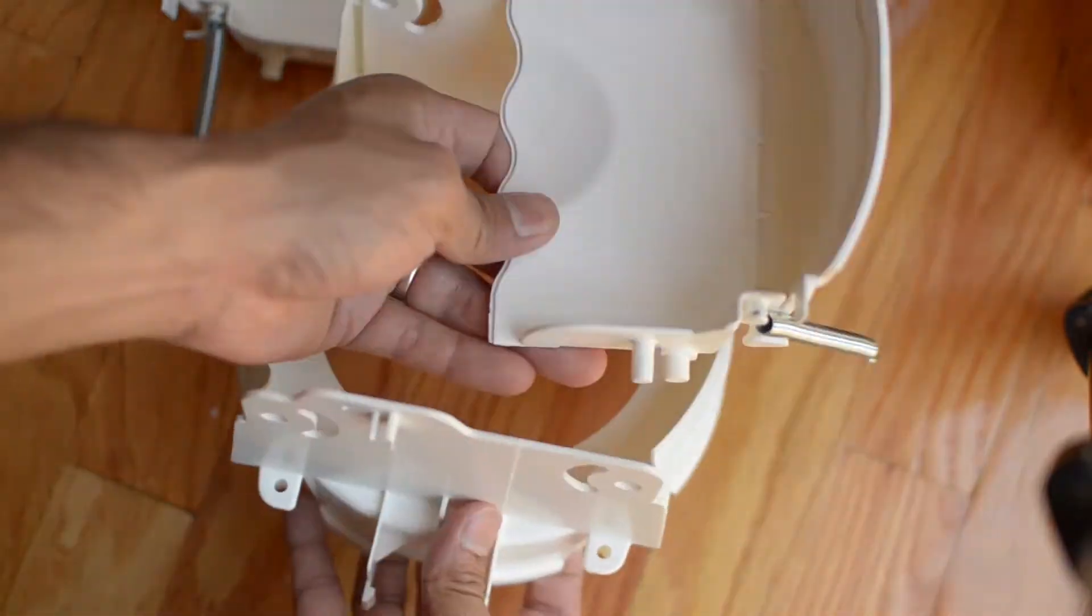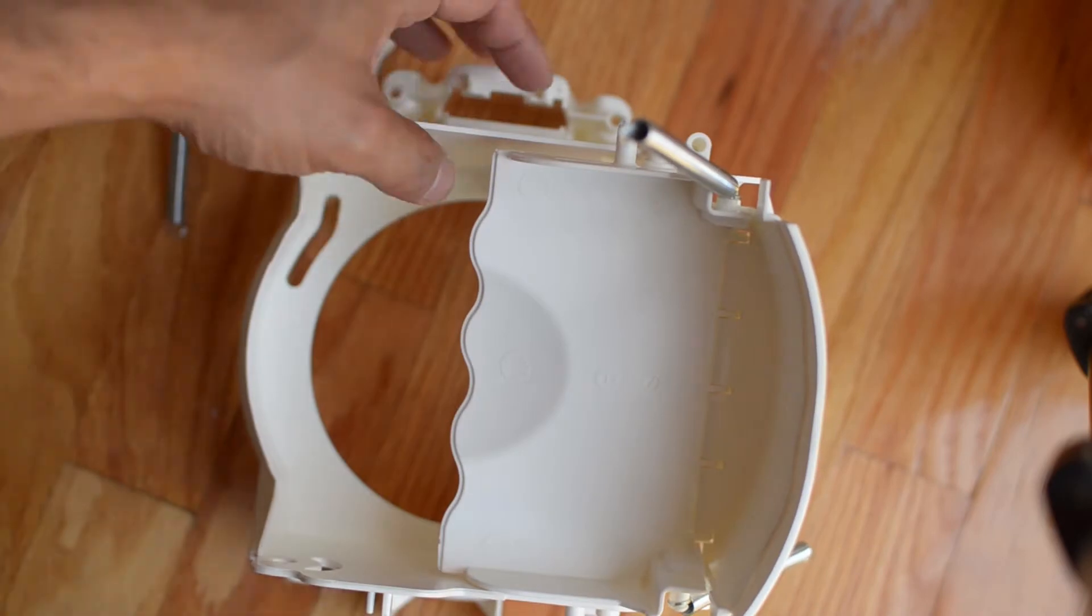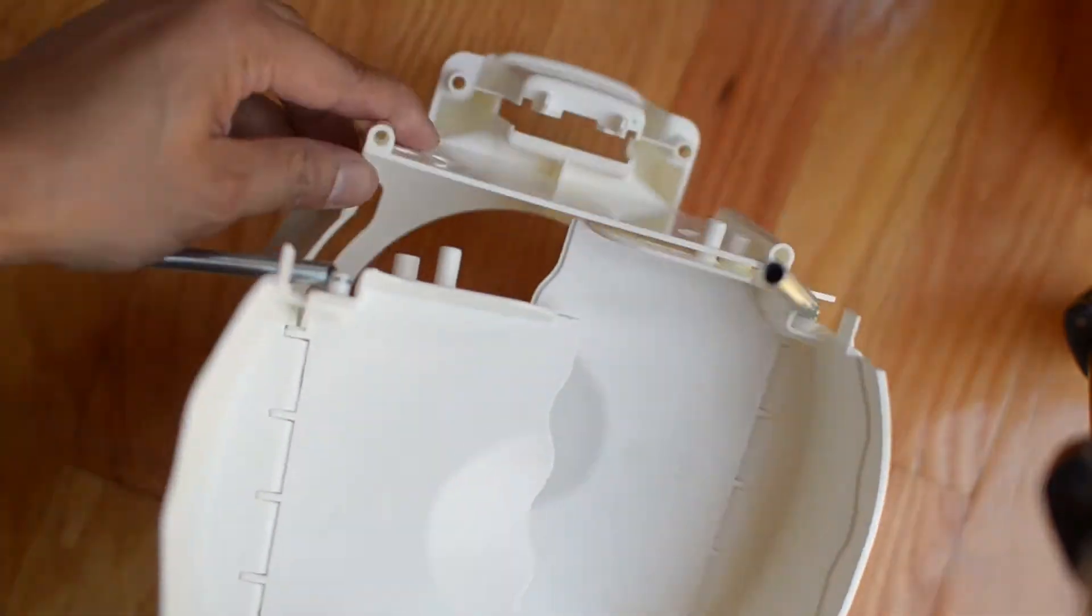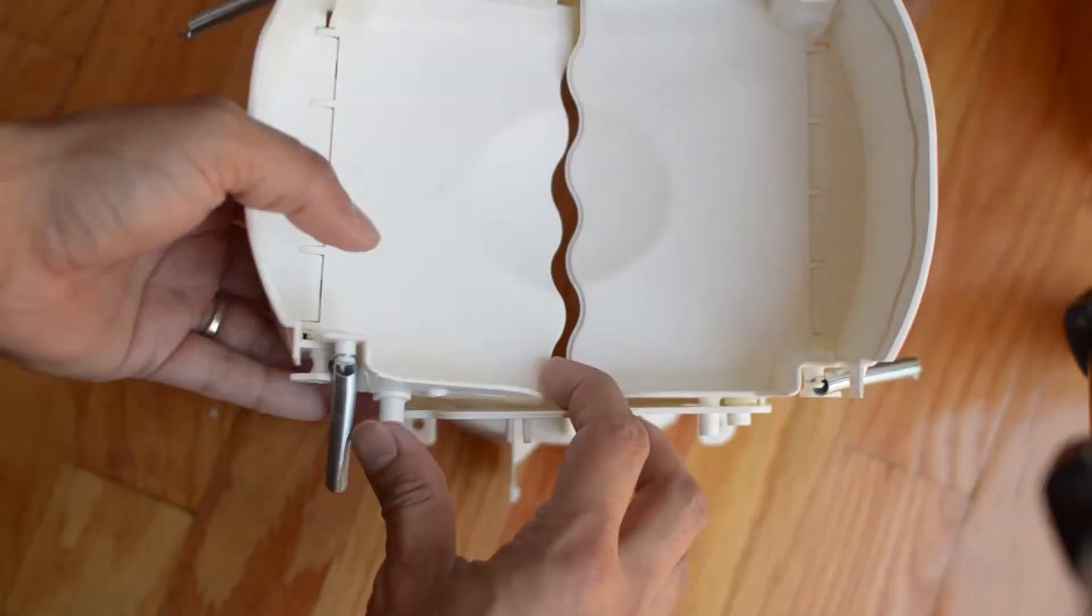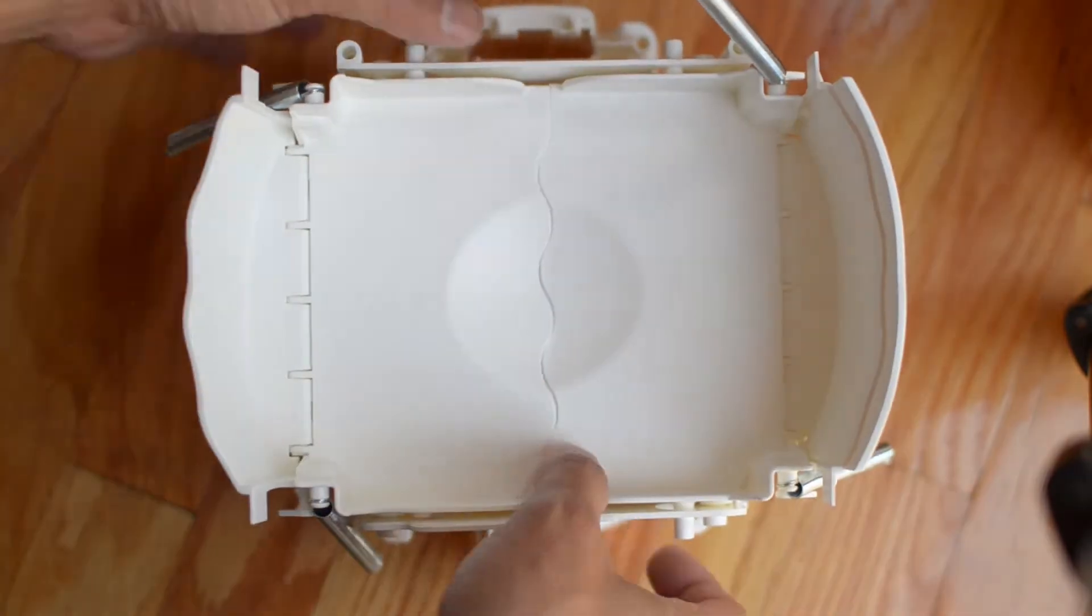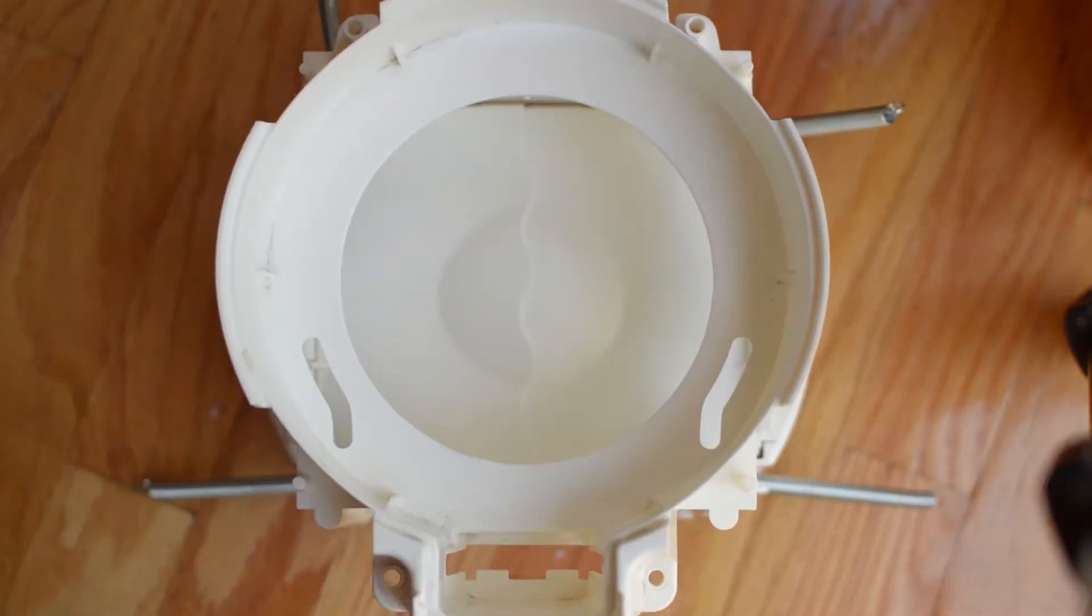After you take out the second flap just rotate it and insert it where the other flap was located. Then insert the other flap where the other flap used to be. It's that easy. Now flip over the assembly and reattach the springs.